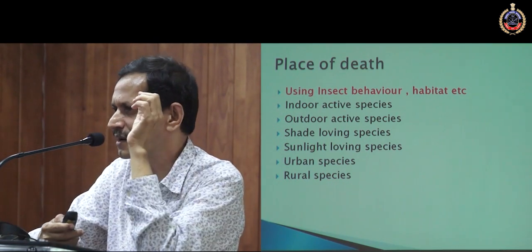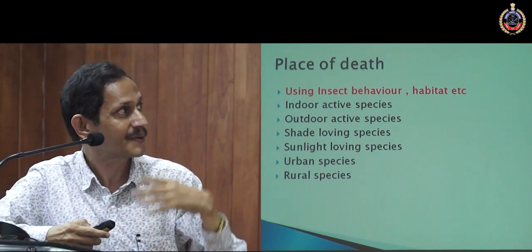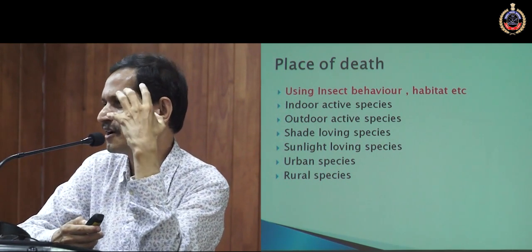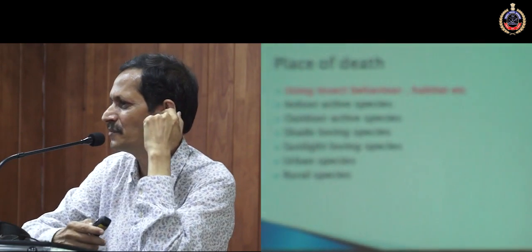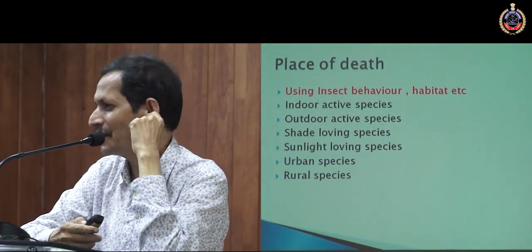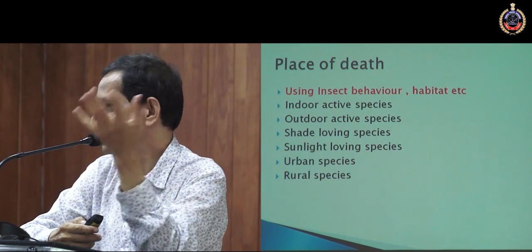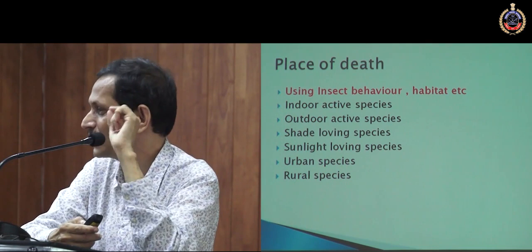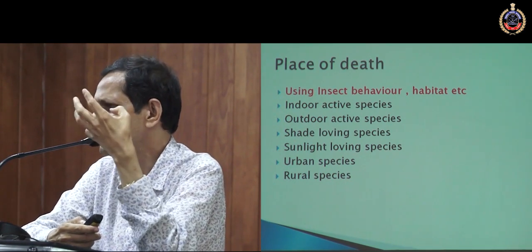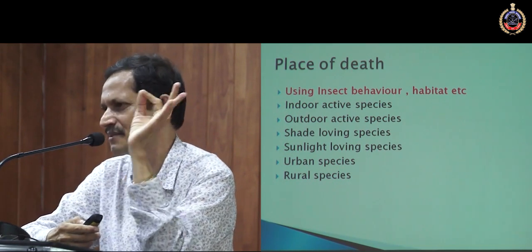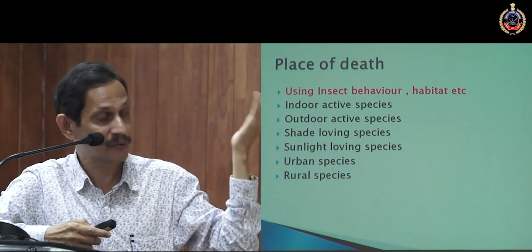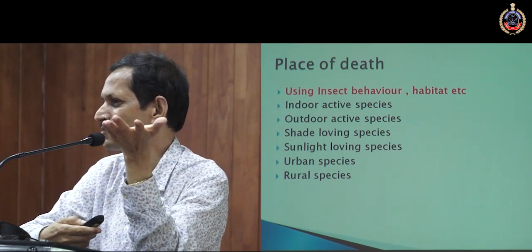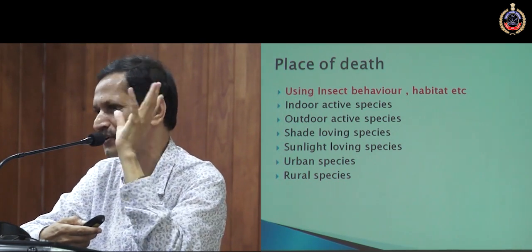Place of death is based on the behavior, ecology, and habitats of insects. There are some species which are active indoors and always prefer indoors. Suppose a body was discovered in the open, but when the insect collection was done, the species found were actually indoor-loving insects. That means the actual murder was done somewhere inside a room — that kind of clue you will get. Similarly, shade-loving versus sunlight-loving insects can give clues about whether it was done in the open or under shade.